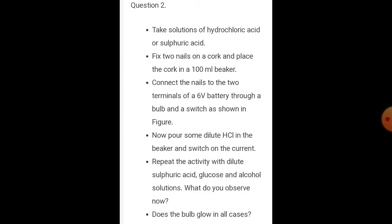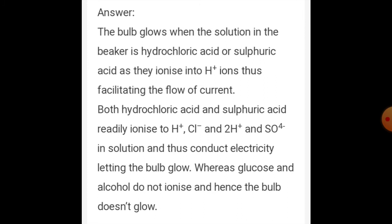Activity two: Take a solution of hydrochloric acid or sulfuric acid. Fix two nails in a cork and place the cork in a 100 ml beaker. Connect the nails to the two terminals of a 6-volt battery through a bulb and switch. Pour some dilute HCl in the beaker and switch on the current. Repeat with dilute sulfuric acid, glucose, and alcohol solution. The bulb glows when the beaker contains hydrochloric acid or sulfuric acid, as they ionize into H+ ions facilitating the flow of current. HCl ionizes to H+ and Cl- ions; H2SO4 ionizes to 2H+ and SO4²- ions. Glucose and alcohol do not ionize, so the bulb does not glow.